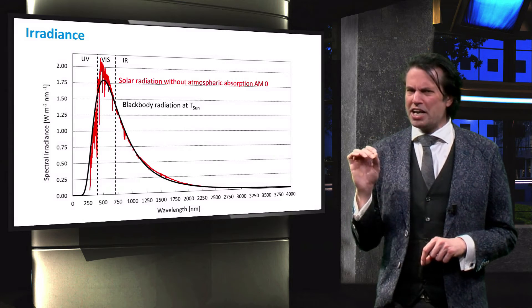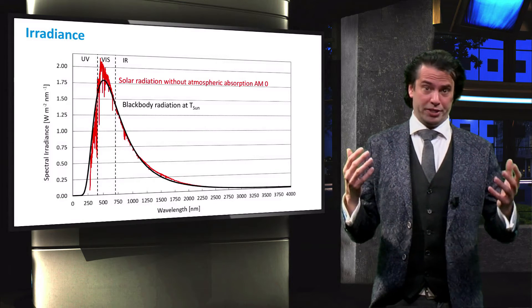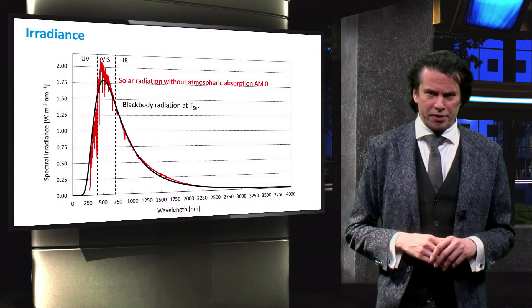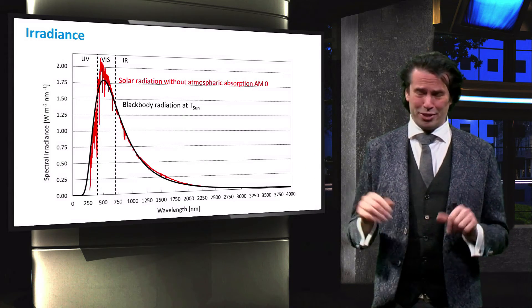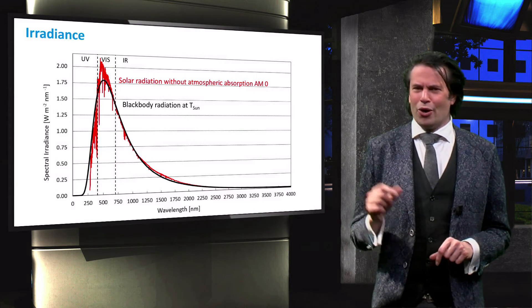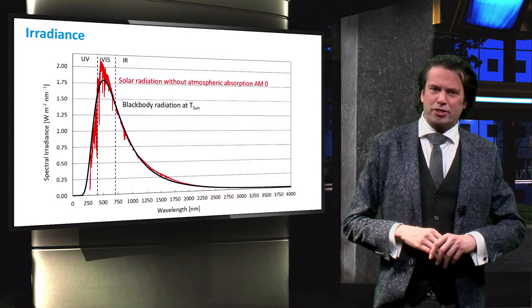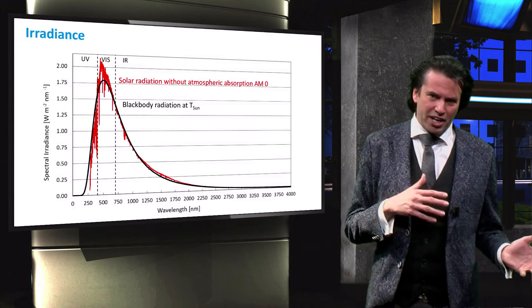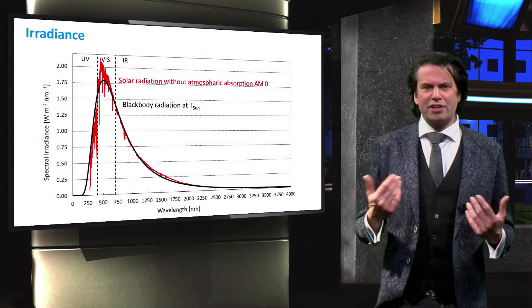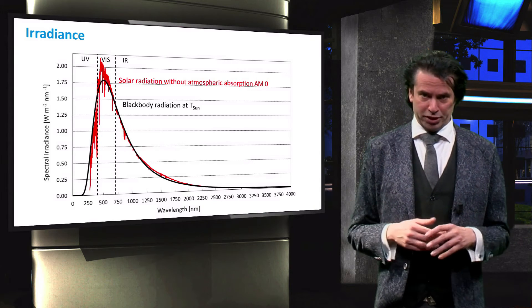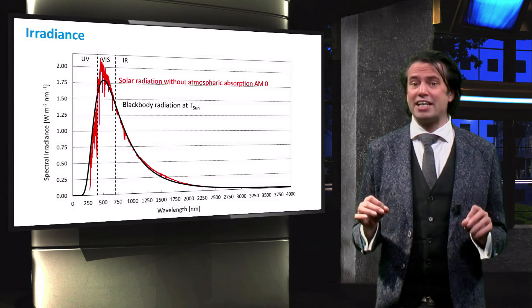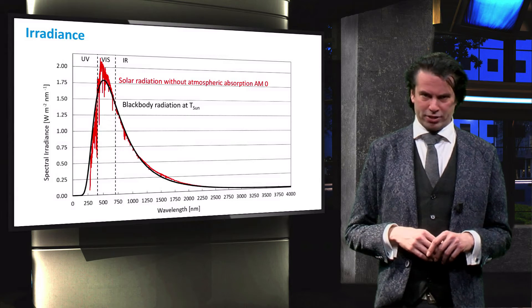If we now introduce the empirical data on the spectral solar radiance, we can see that Planck's law gives a very good approximation. Only in the visible part of the spectrum is the irradiance underestimated. The red curve shows the spectral irradiance outside of Earth's atmosphere. This spectrum is known as the AM0 spectrum.